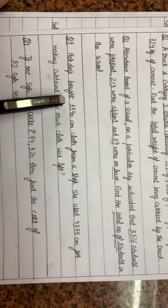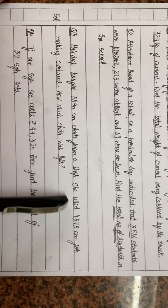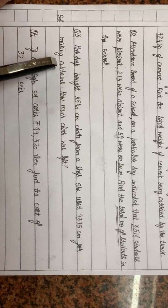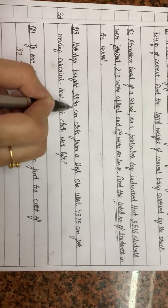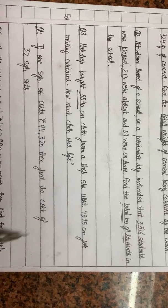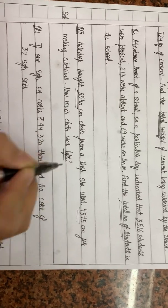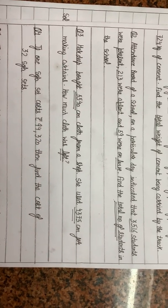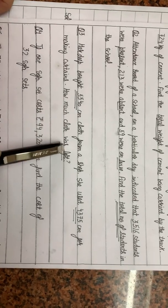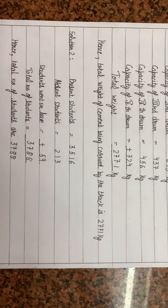Moving on to the next question. Hardeep bought 5540 centimetres of cloth from a shop. She used 4375 centimetres for making curtains. How much cloth was left? This question is saying that Hardeep bought 5540 centimetres of cloth and used 4375 centimetres to make curtains. How much cloth was left? Left means we find what remains. In this case we will do minus — obviously subtract. Let's have a look at the solution.